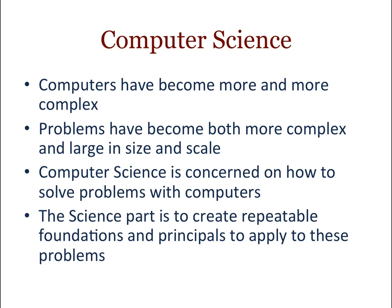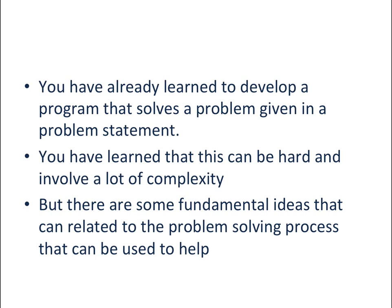The science part of computer science is about having repeatable foundations and principles that can be applied to problems. You've already learned how to develop a program given a problem statement. When you get into larger programs, you have to develop a more systematic way of doing that — breaking down the problem statement and identifying what parts apply to the program. That's more of an advanced software engineering topic.